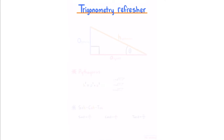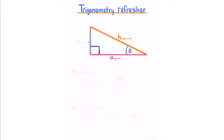Trigonometry refresher. In this course we'll extensively be using trigonometry, so here we briefly go over the basics. Every triangle we apply mathematics to in this course will be a right-angle triangle, which makes the mathematics a lot easier. Our longest side is the hypotenuse; the other two sides depend on where the angle is — adjacent is adjacent to the angle, opposite is opposite. Pythagoras gives us: hypotenuse² = opposite² + adjacent².